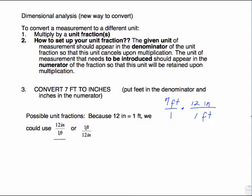Then the feet cancel out. We will just be left with inches, which is what we want, and then we do this arithmetic. 7 times 12 is 84. You set up the unit fraction like this: the given unit of measurement should appear in the denominator. The given unit of measurement, we were given feet, it appears in the denominator because we want that to cancel out. The unit of measurement that needs to be introduced should appear in the numerator. We wanted our answer to be in inches, so that's what was in the numerator.